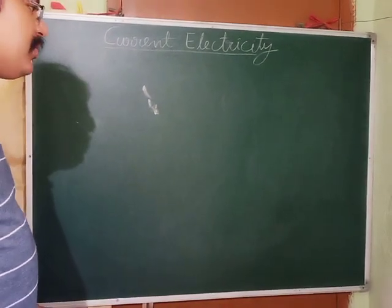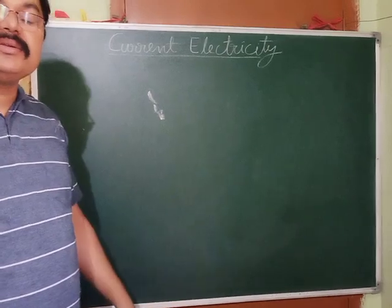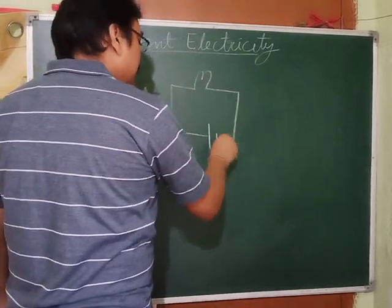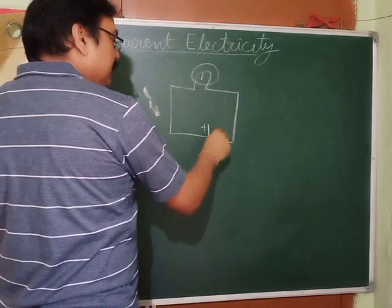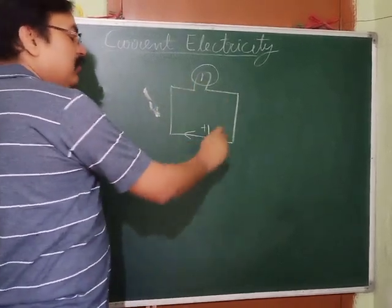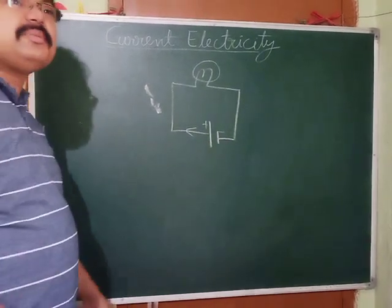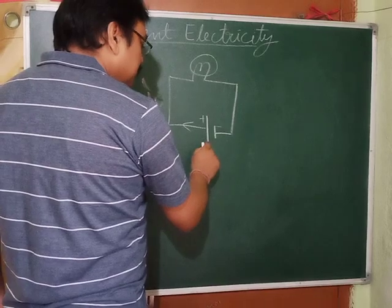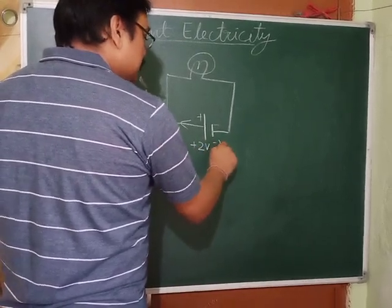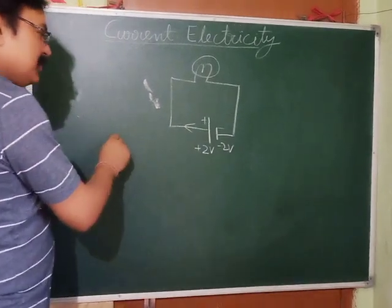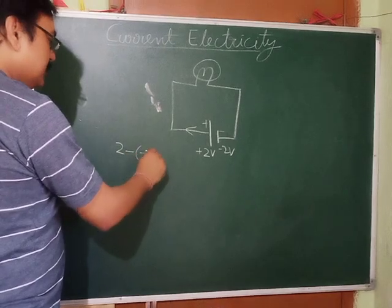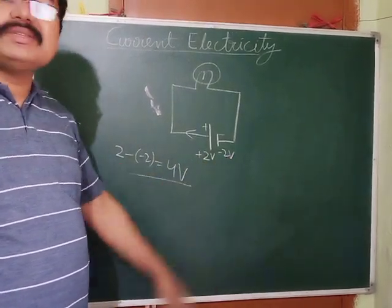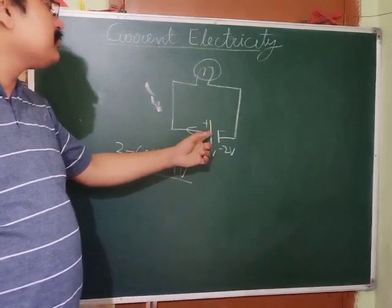Current always flows from the higher potential to lower potential. In a circuit the current flows from the positive terminal — which is at higher potential — to the negative terminal — which is at lower potential. For example, if one end is at +2 volt and another at -2 volt, the potential difference is 4 volt, and +2 is the higher potential.